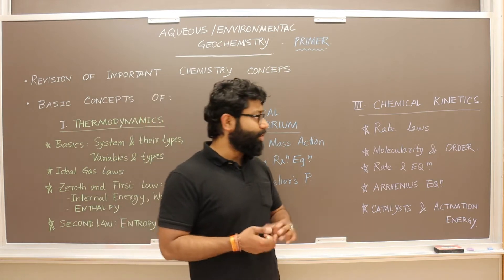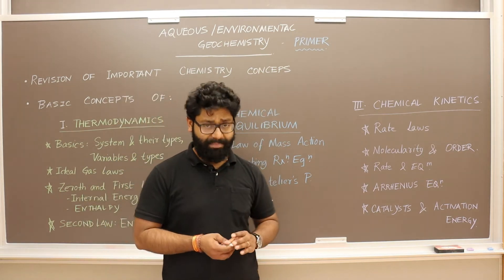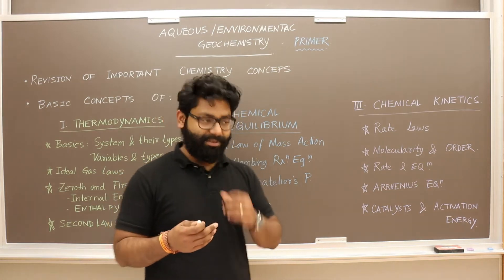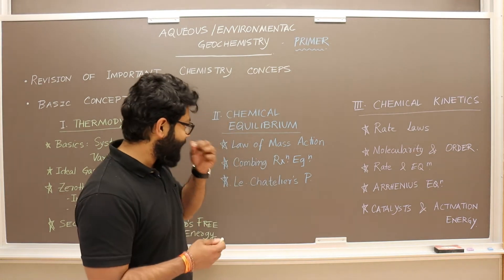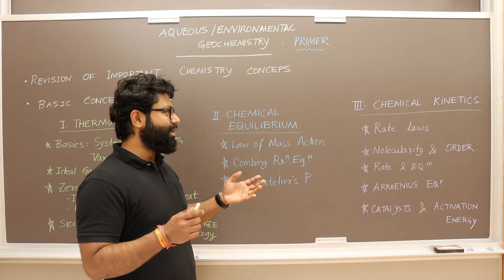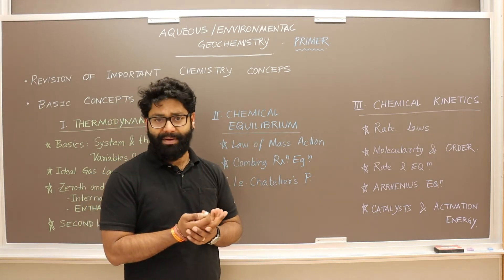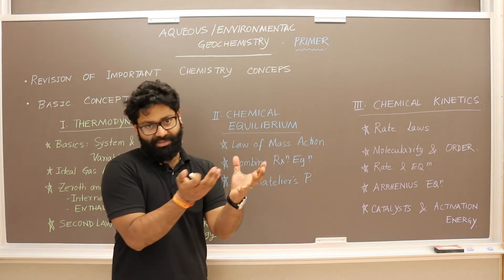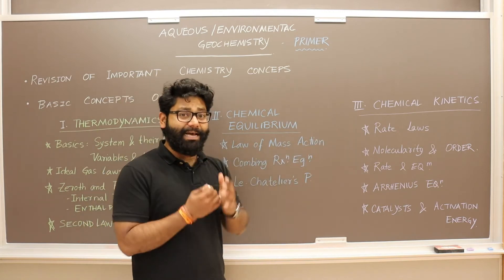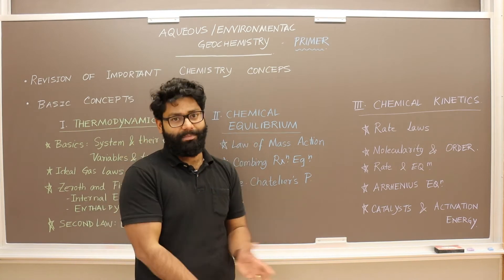Chemical kinetics is the third concept, which tells us how fast things are happening — that is, the rate of change of reactions. Chemical equilibrium alone cannot tell us how fast things happen once equilibrium is reached, but chemical kinetics addresses that important part.